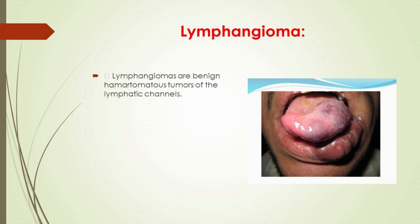Lymphangiomas are benign hamartomatous tumors of the lymphatic channels. They are thought to be developmental malformations arising from sequestration of lymphatic tissues that do not communicate with the rest of the lymphatic channels. Oral lesions are most frequently found on the tongue. Treatment options include injection of sclerosing solutions, cryosurgery, and intravascular embolization with silicone spheres.